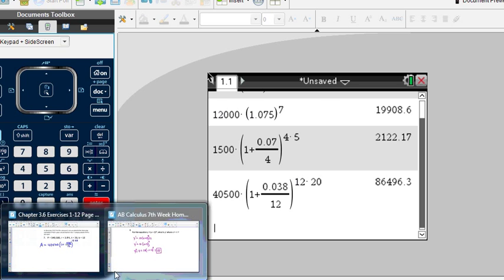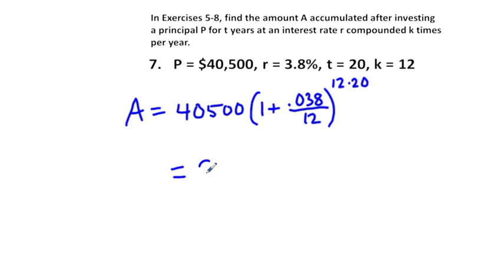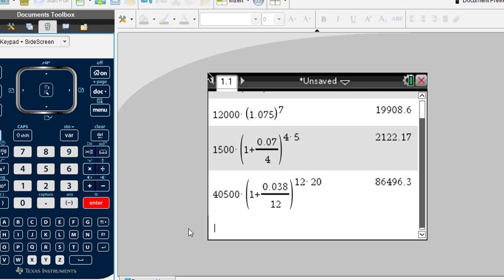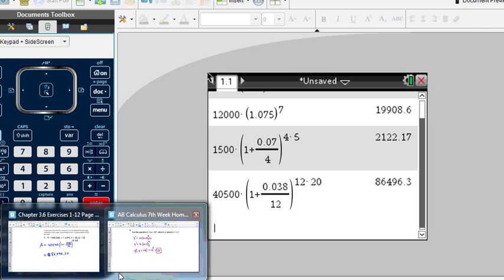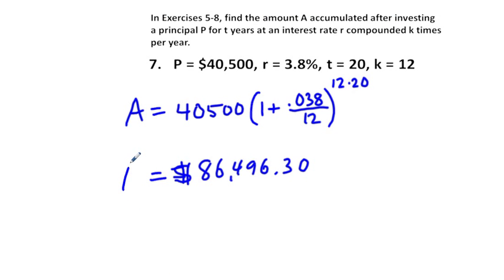We have here $86,496 and $0.27. That's going to be our amount.